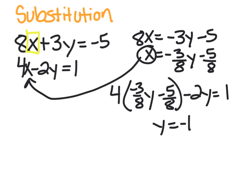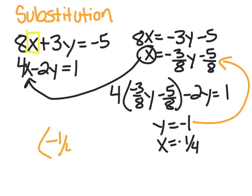And then you plug it back in. The easiest place to do it would be right there, and plug it in to get an x value of negative 1 fourth. And when you answer the question, remember you're always giving an ordered pair. So negative 1 fourth is the x, and negative 1 is the y.